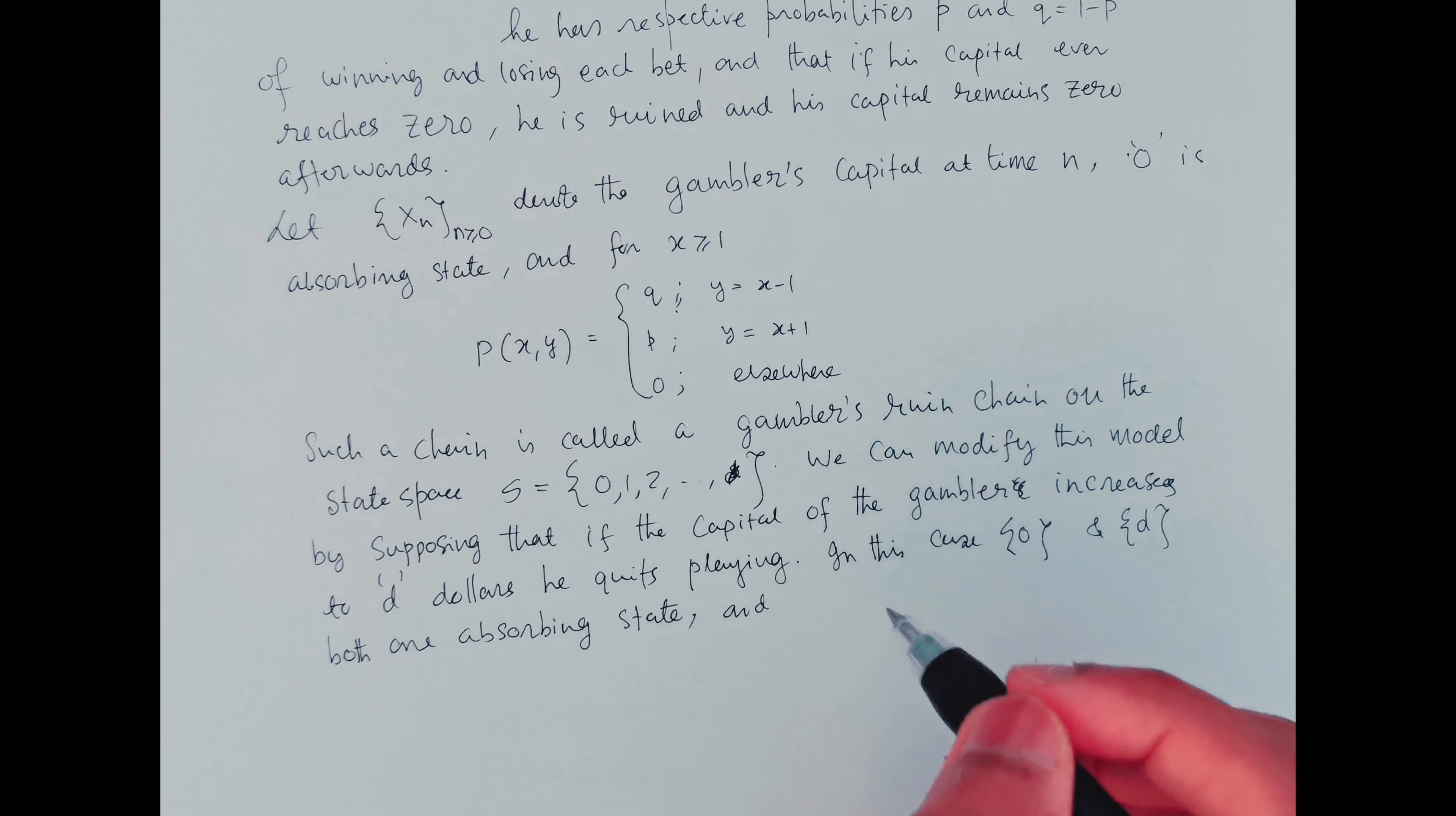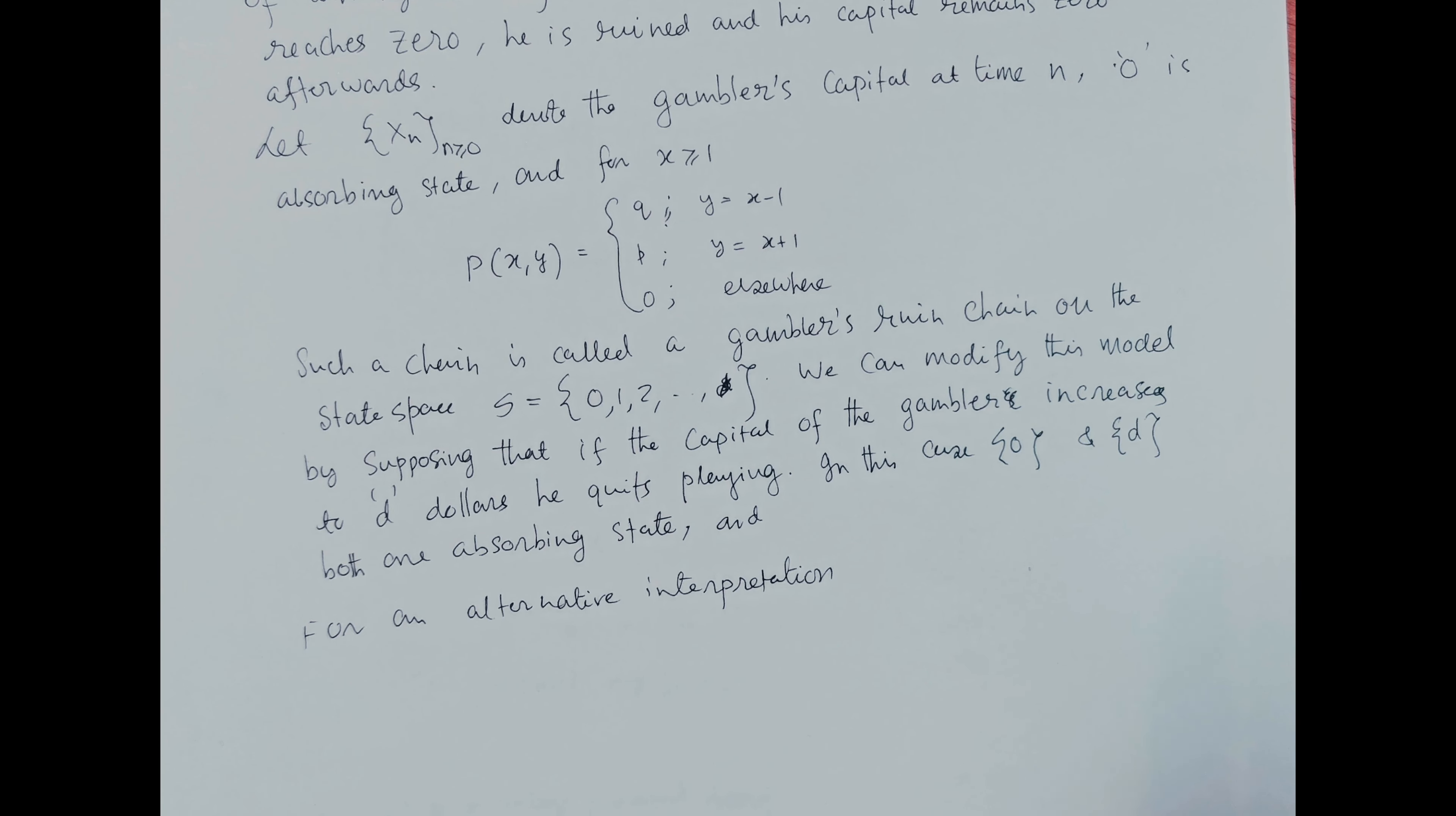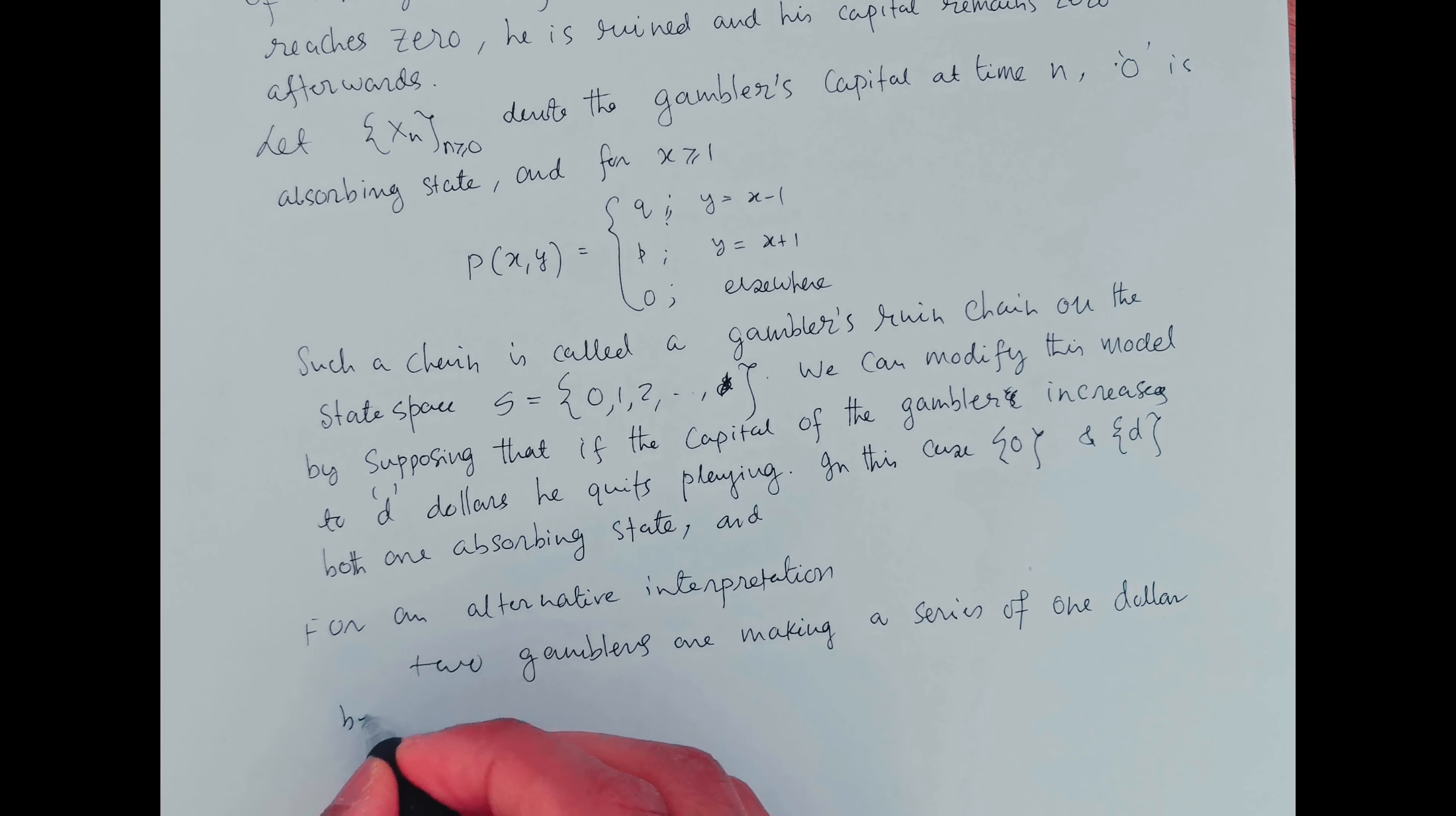And so for an alternative interpretation of this chain, we can assume that two gamblers are making a series of one dollar bets against each other.